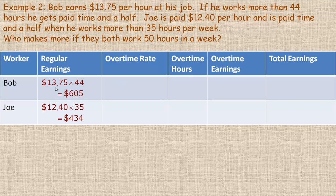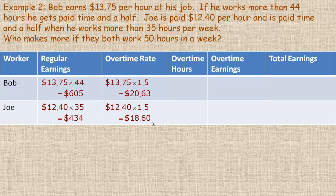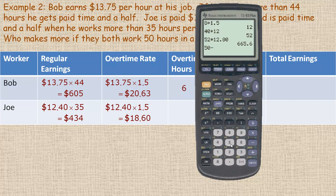Bob's overtime rate is $13.75 times 1.5 = $20.63 per hour. Joe's overtime rate is $12.40 times 1.5 = $18.60 per hour. At 50 hours, Bob has overtime from 44 to 50 — that's six hours of overtime. Joe has overtime from 35 to 50 — that's 15 hours of overtime.